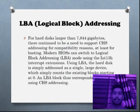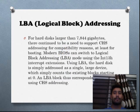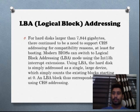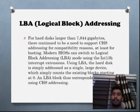Next is LBA addressing. LBA addressing is Logical Block Addressing. For hard disk it is used for hard disks larger than 7,844 gigabytes. There continues to be a need to support CHS addressing for compatibility reasons — at least for booting we need CHS addressing. Otherwise, LBA addressing is the upgraded version of CHS. Using LBA, the hard disk is simply addressed as a single large device which counts the existing blocks starting at 0.